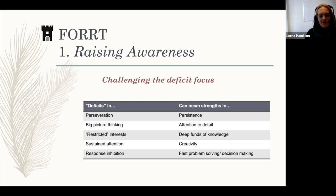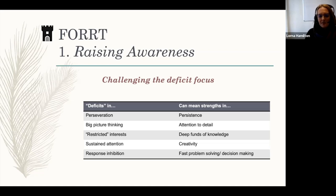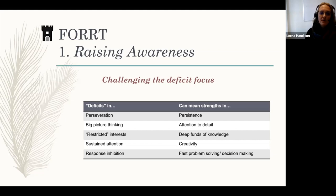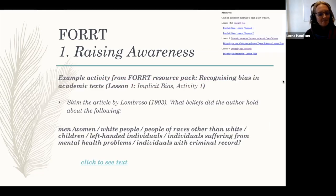So we can change that. On the slide here are just some examples of cognitive styles that are typically presented as deficits in the scientific literature. A deficit in perseveration could equally be presented as a strength in persistence and focused attention. Weak central coherence — a common account of autism — can be presented as a strength in attention to detail. Response inhibition, characteristic of ADHD, can also be flipped and seen as a strength in fast problem-solving and decision-making. So the neurodiversity paradigm challenges us to notice and harness these strengths in our teaching, in the way we talk about neurodiversity, and in the way we interact with our neurodivergent students.